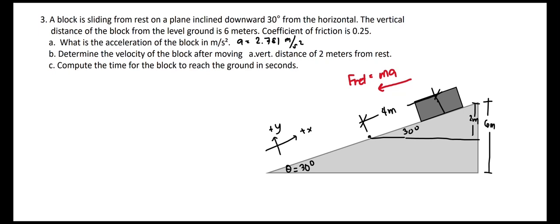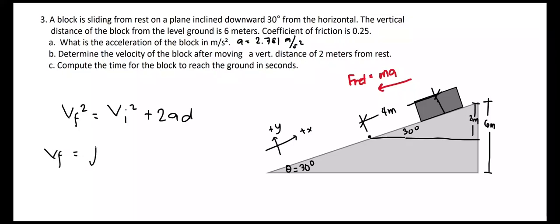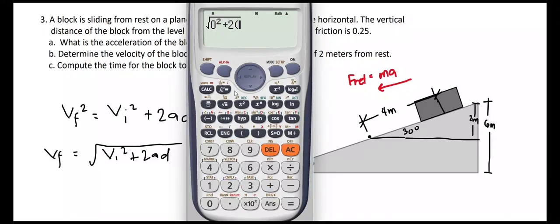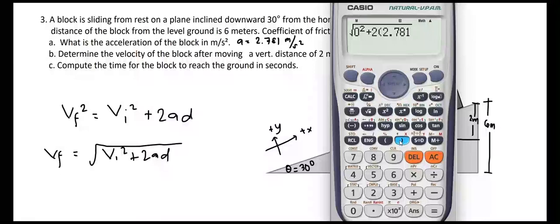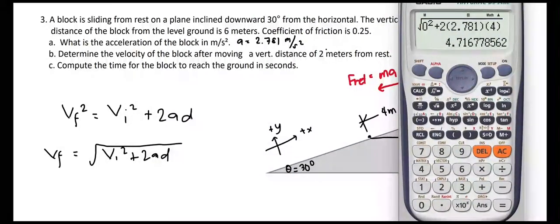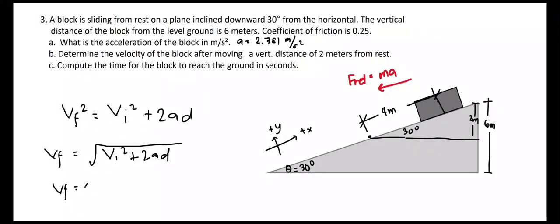Given our acceleration and the inclined distance, we solve for the velocity using the kinematic equation: vf² = vi² + 2ad. Taking the square root, vf equals the square root of vi² + 2ad. Plugging in the known values: vf = √(0² + 2 × 2.781 × 4 meters), which gives a final velocity equal to 4.717 meters per second. This is the final answer for the second problem.